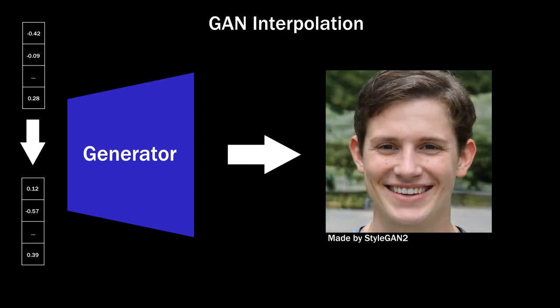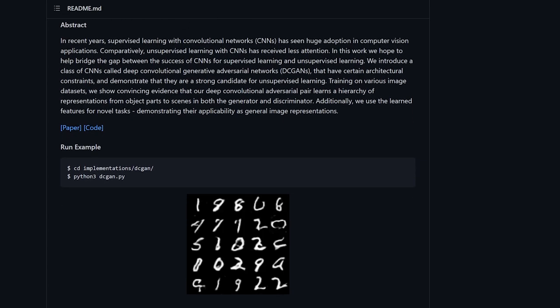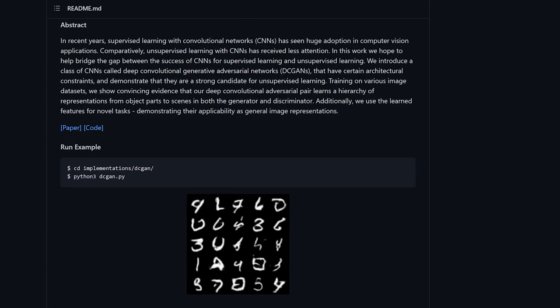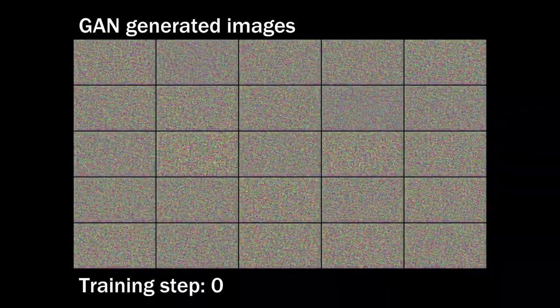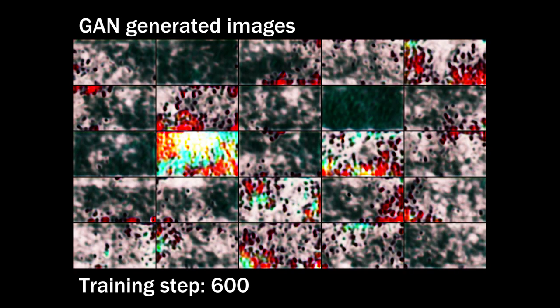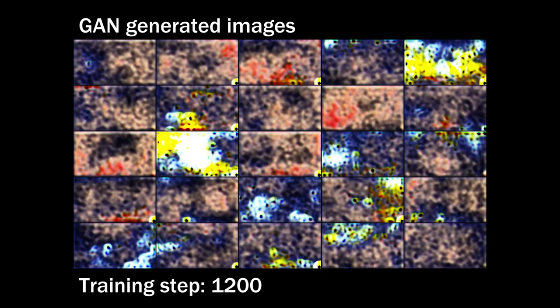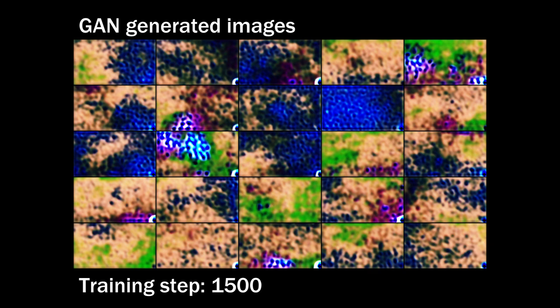I decided to train a GAN on my thumbnail dataset. Because the internet is a better programmer than I'll ever be, I borrowed an open-source GAN implementation, fixed it up, and started it off training. The generator started by outputting random images, and the discriminator quickly learned that random noise does not look like YouTube thumbnails, so the generator output more distinct colors and shapes, which the discriminator grew wise to, and the game is on. You can see what the generator is cooking up as it learns, and hopefully these splotchy patterns should eventually start looking more like YouTube thumbnails.